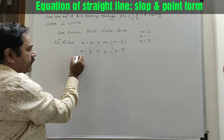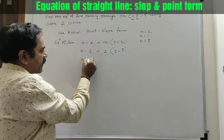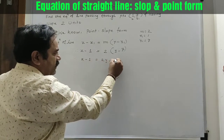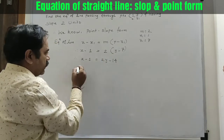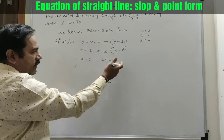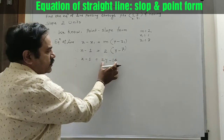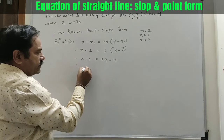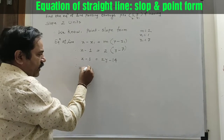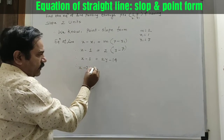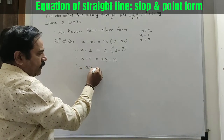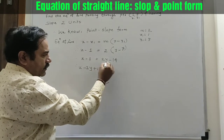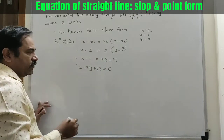Now simplify it. x minus 1 is equal to 2y minus 14. So take 2y minus 14 on the left side. We will get x minus 2y plus 13 equal to 0.